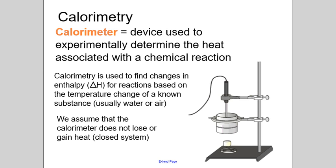It is used in finding something called enthalpy, which is Delta H. We haven't talked about it too much, so this will kind of introduce enthalpy a little bit — something we'll talk more in depth in class and maybe future videos as well. What you're doing is there'll be this enthalpy value, this energy value, and it's going to cause a temperature change in a known substance — usually water, sometimes air, depending on how the calorimeter is set up.